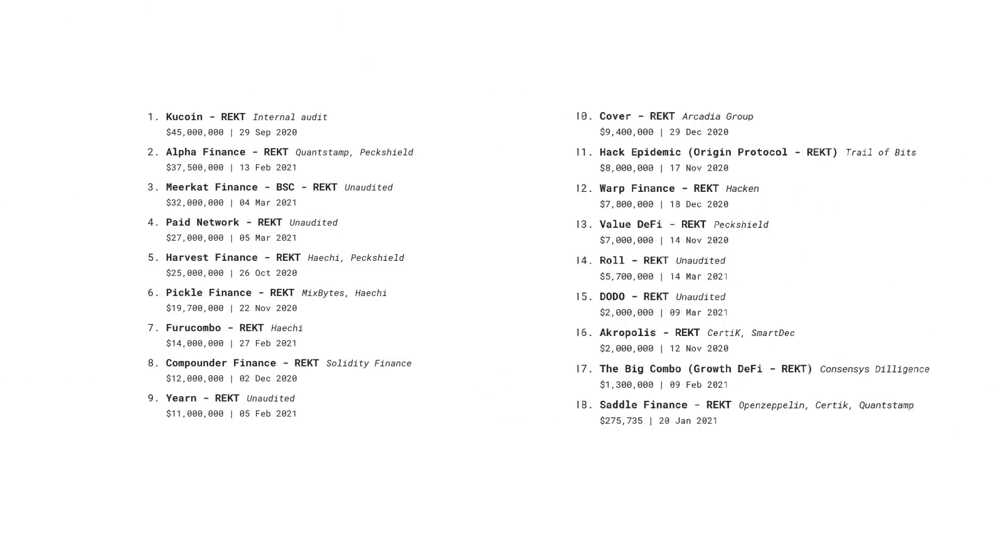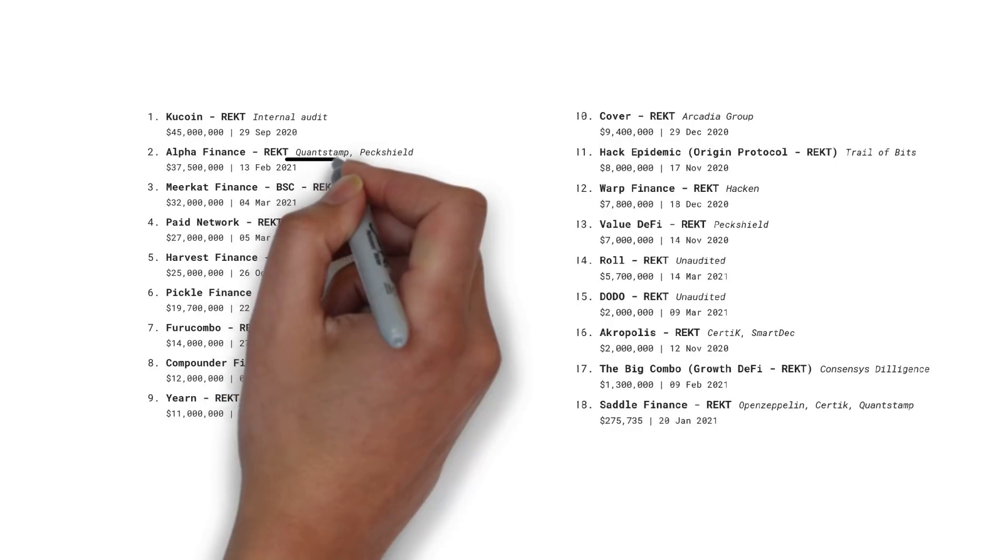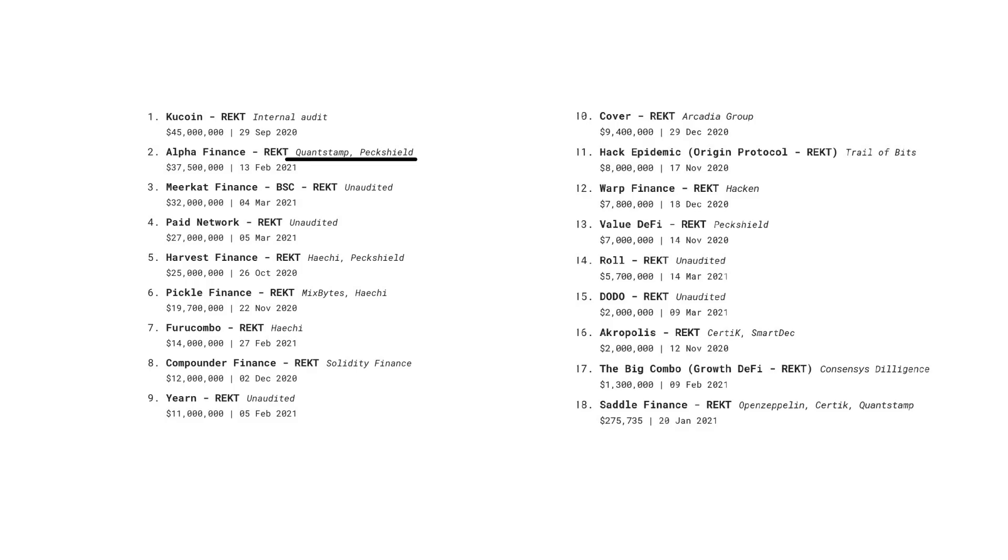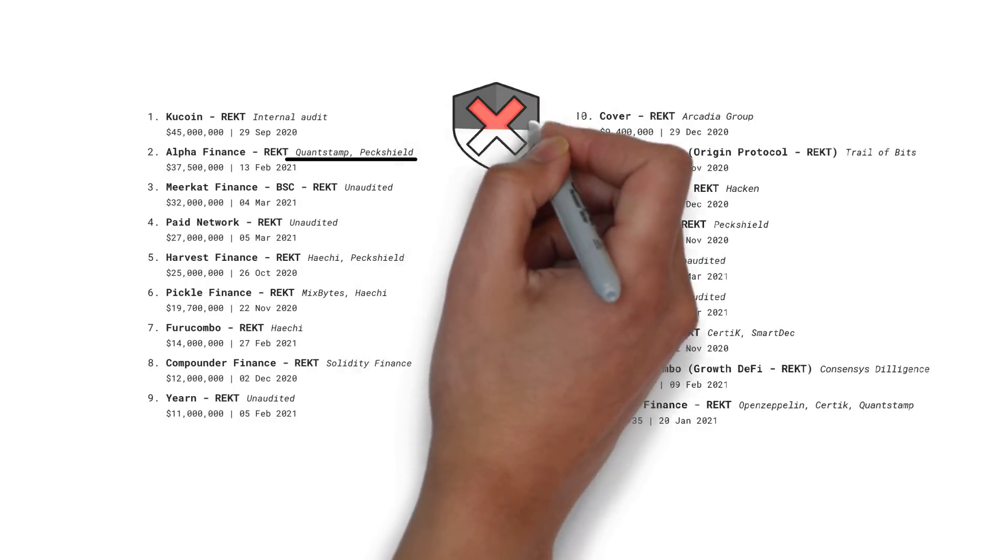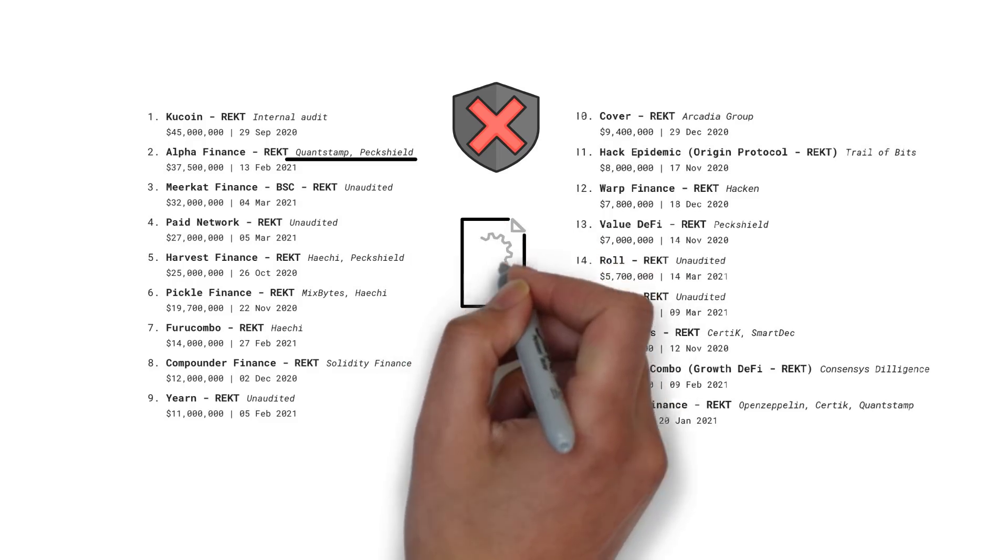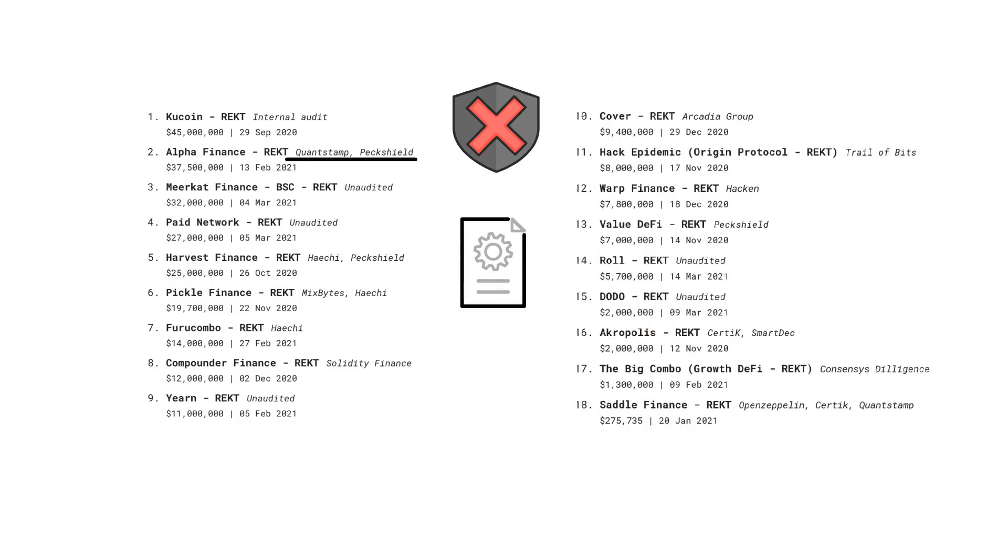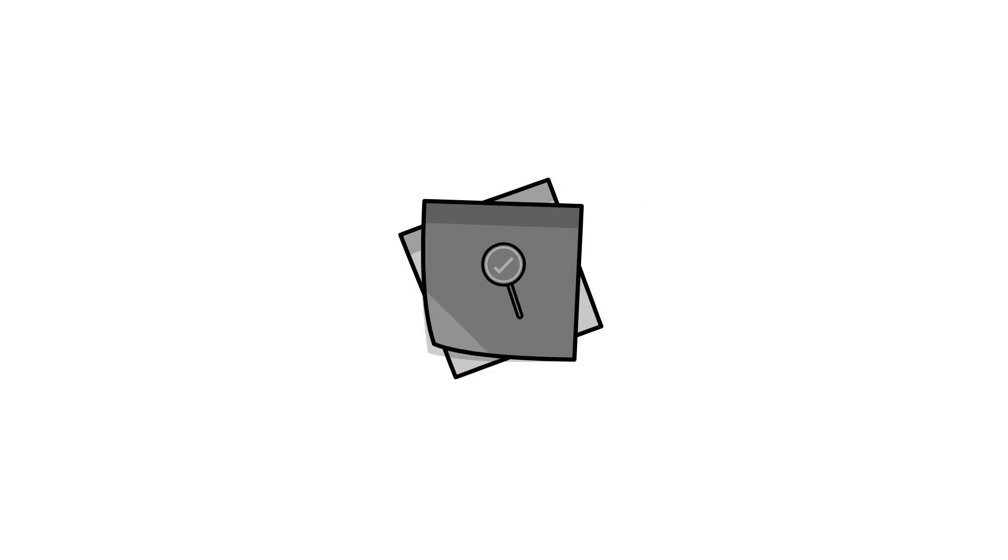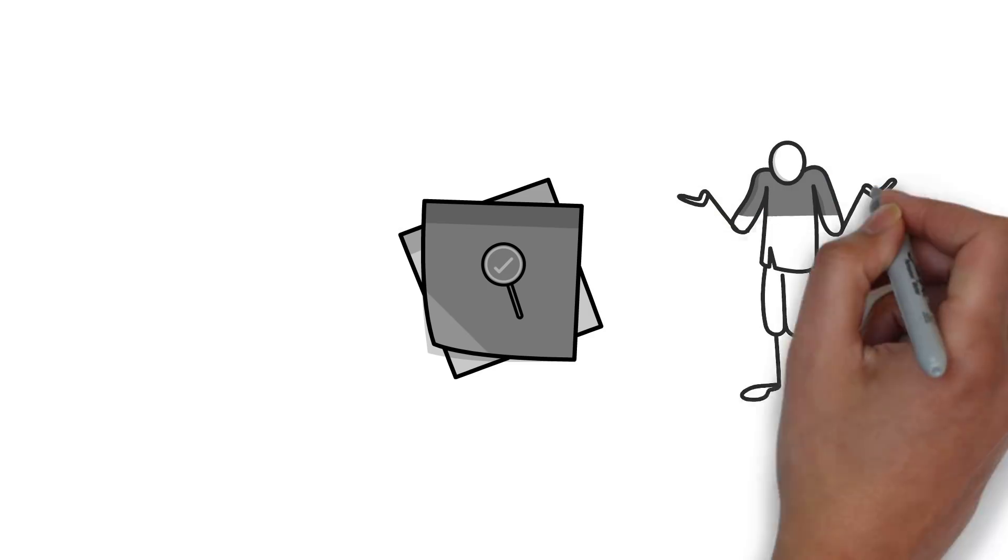If you look at the Rekt leaderboard, we can see that the majority of hacked protocols actually had a security audit completed prior to the attack. This proves that an audit is not a guarantee of safety and audit firms can also fail. The leaderboard shows who audited the specific piece of code that was exploited. According to the leaderboard, the most notorious security companies are currently PekShield with three failed audits, Certik with two and Quantstamp also with two. Many of the most recent Rekt.News articles covered audited protocols, showing that in the end there is very little difference between an audited and unaudited protocol.